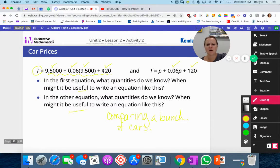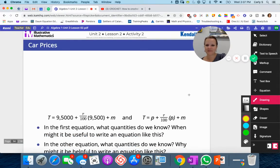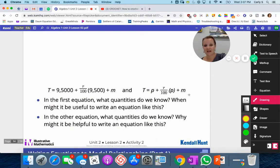In the other equation, what quantity do we know? When might it be useful? The second equation, if we're comparing a bunch of car prices, would be very useful. The first equation, if we know all the things about a particular car and we're trying to figure out the total cost of that one car, the first equation is more useful.